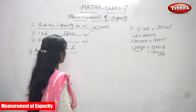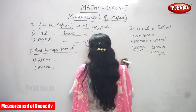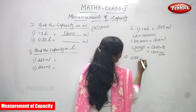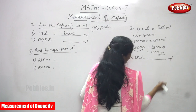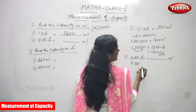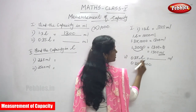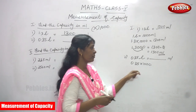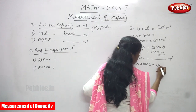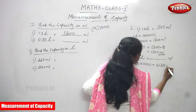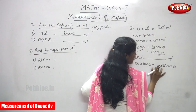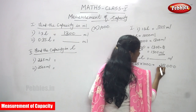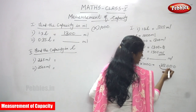The next one is 0.35 liters. The second sum: 0.35 liters is equal to how many milliliters? So 0.35 into 1000, because one liter is equal to 1000 ml. Bigger unit converting to smaller unit means you multiply by 1000. Write 0.35 as it is. In 1000 there are three zeros, so this zero before the decimal is not considered because it only represents the decimal.